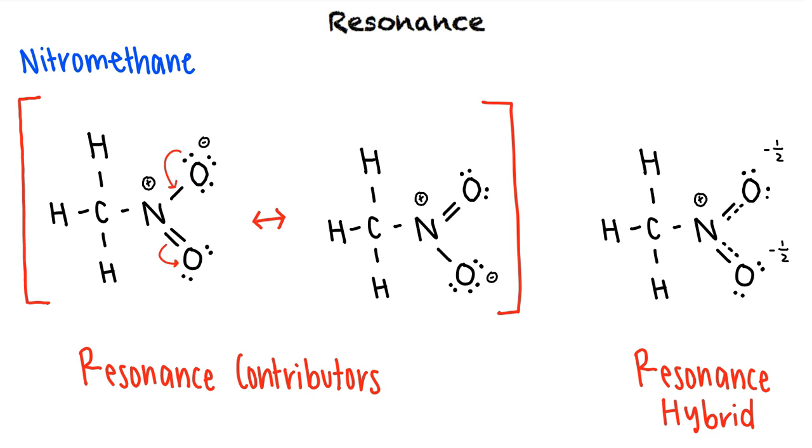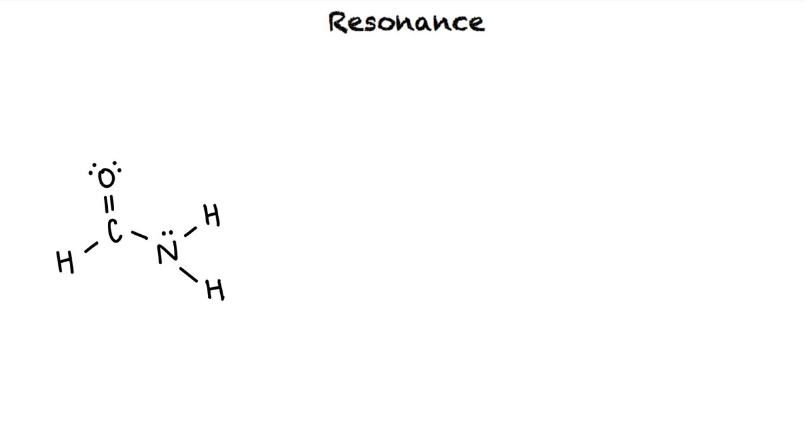Sometimes, the two resonance contributors do not contribute equally to the resonance hybrid as in this example. Let's take a look at a new structure. In this case, the oxygen, carbon, and nitrogen participate in a conjugated system. The lone pair of electrons on nitrogen can be pushed into a double bond, and the electrons from the carbon-oxygen double bond can be pushed into a lone pair on oxygen.